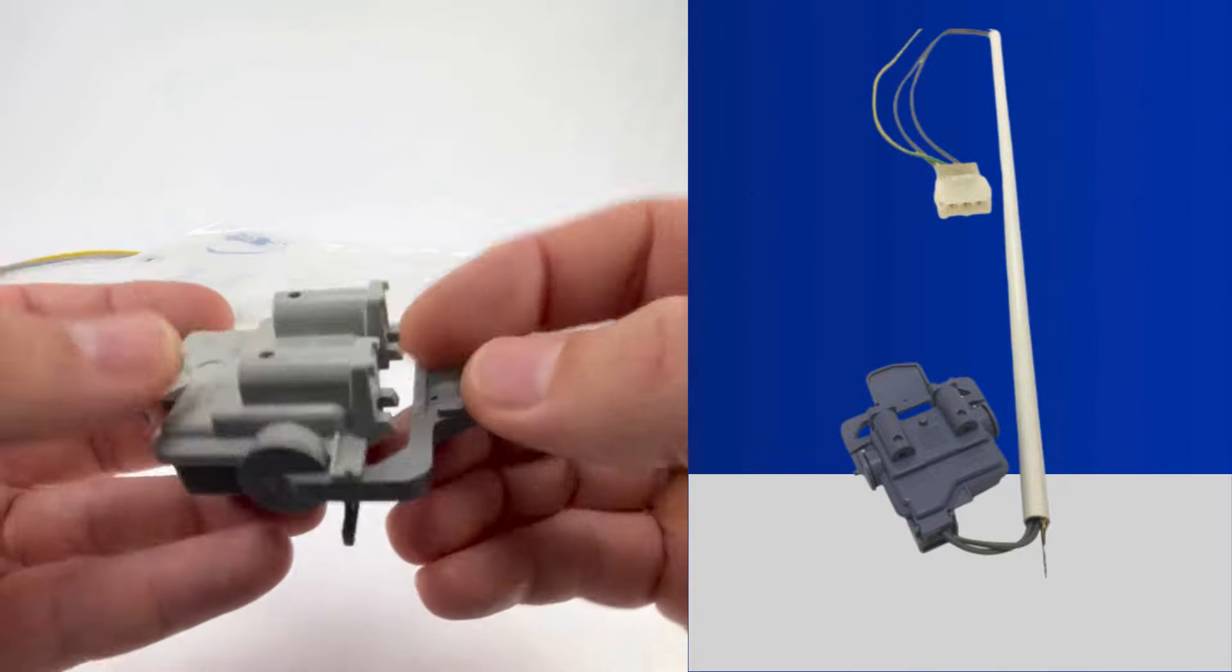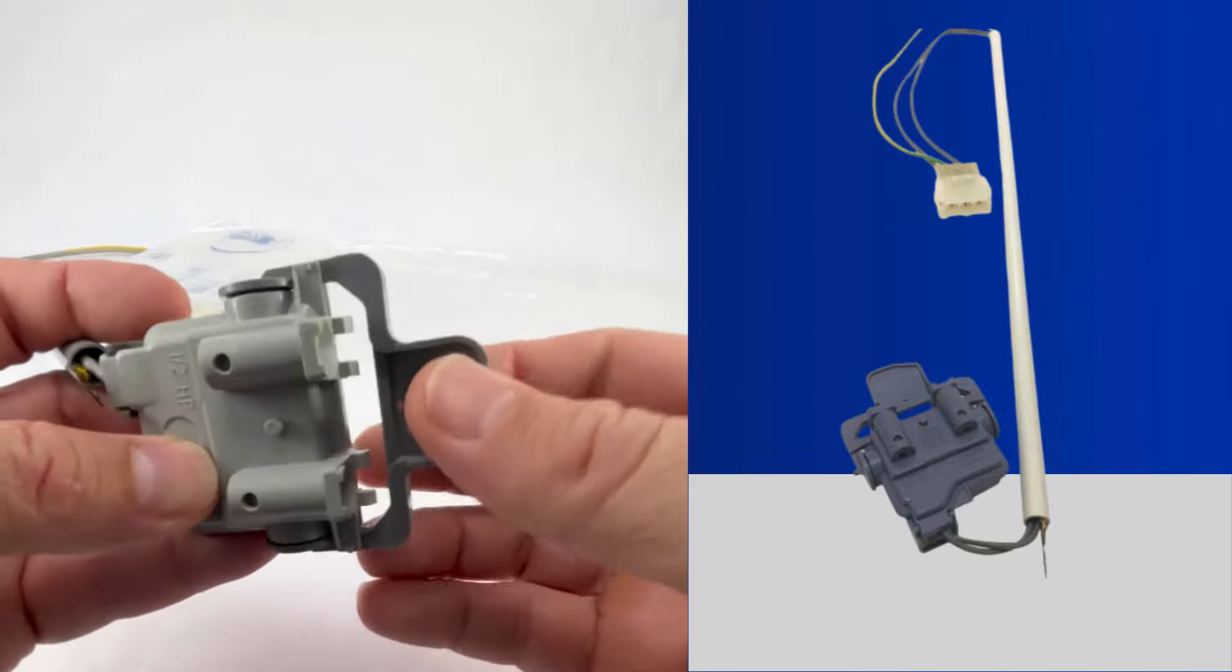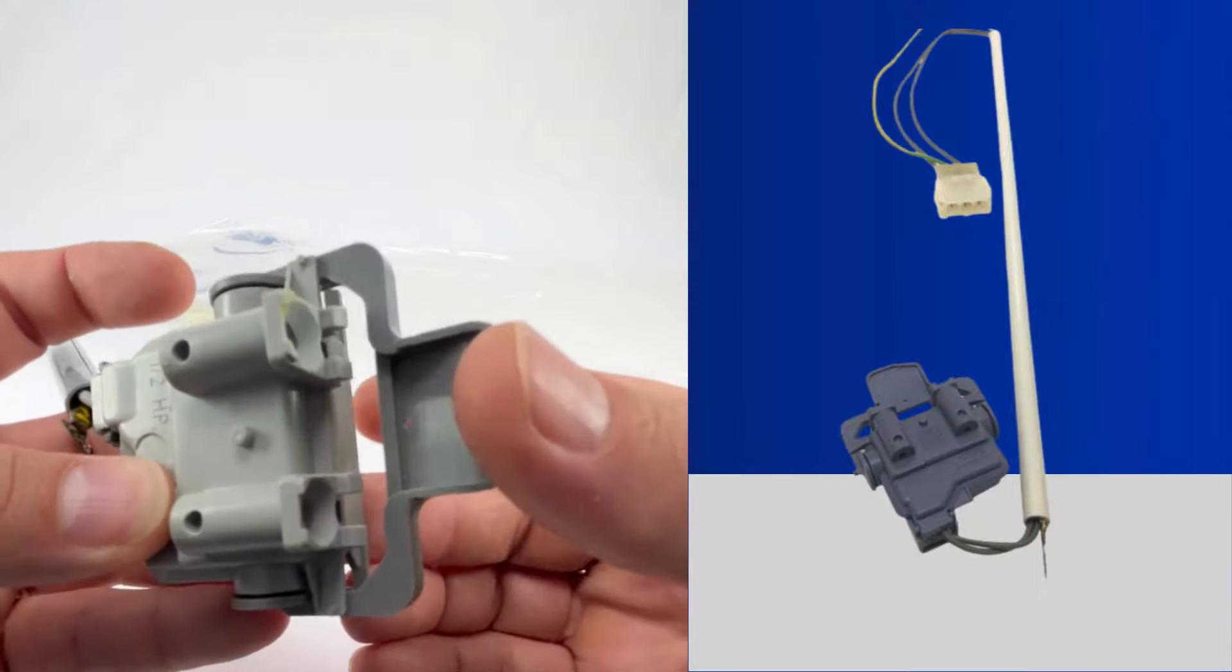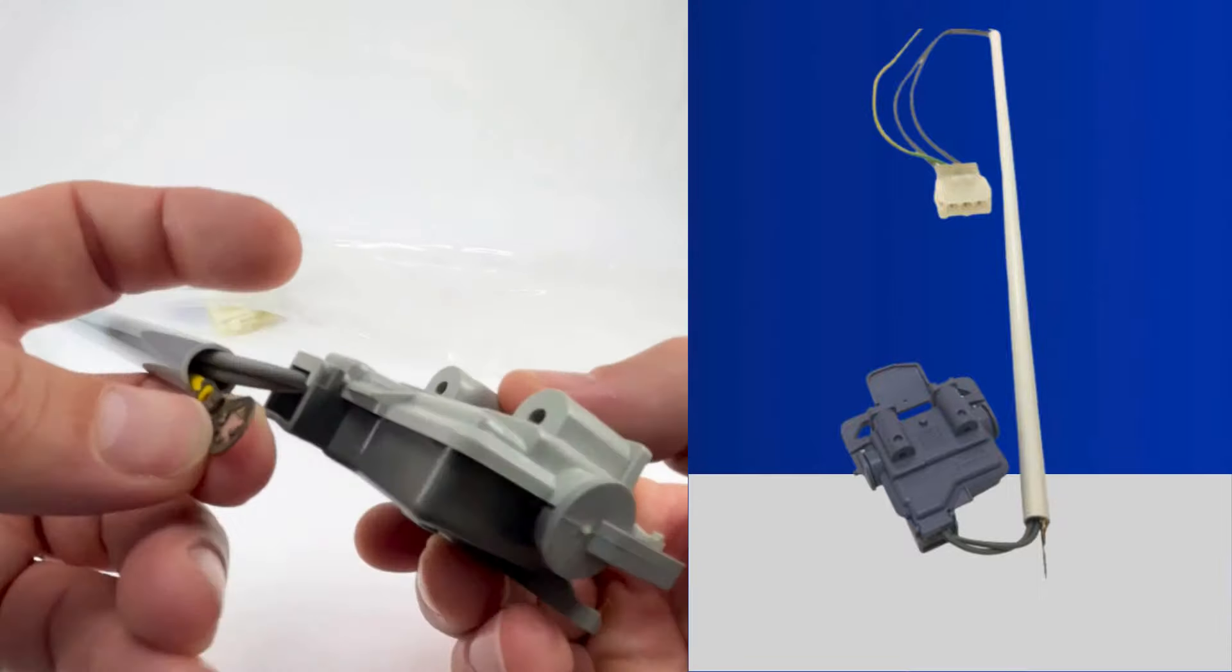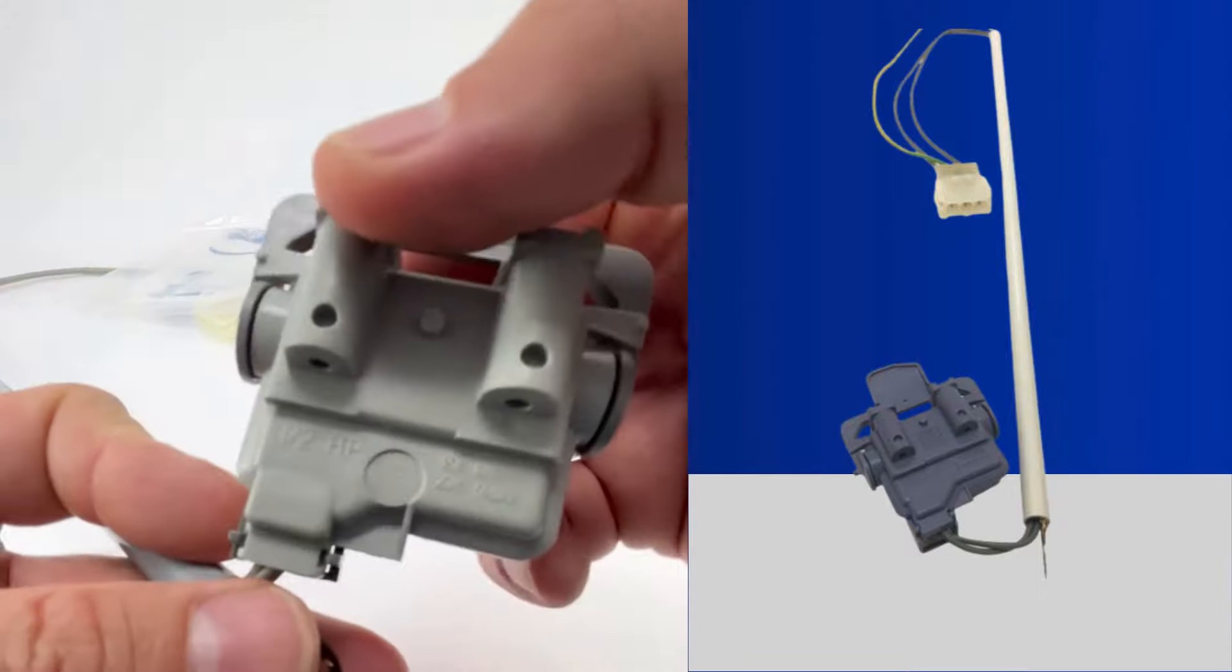The lid switch is a safety feature that prevents the washer from spinning with the lid open. Replacing it is a simple DIY project, although we recommend contacting a service technician if you're unsure.